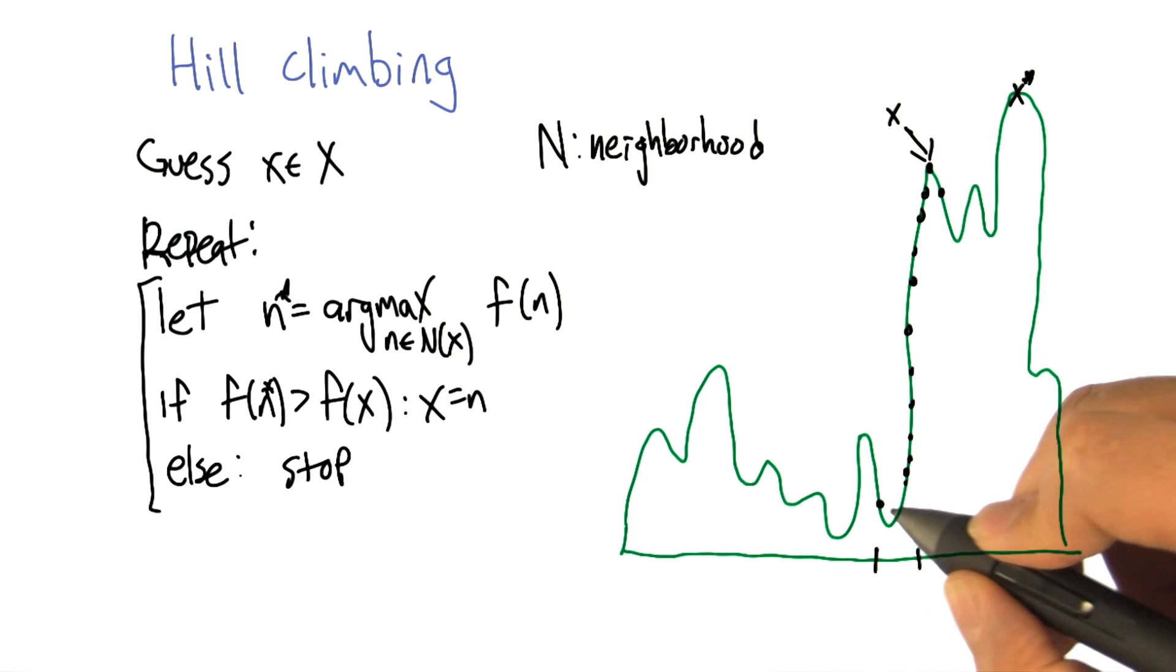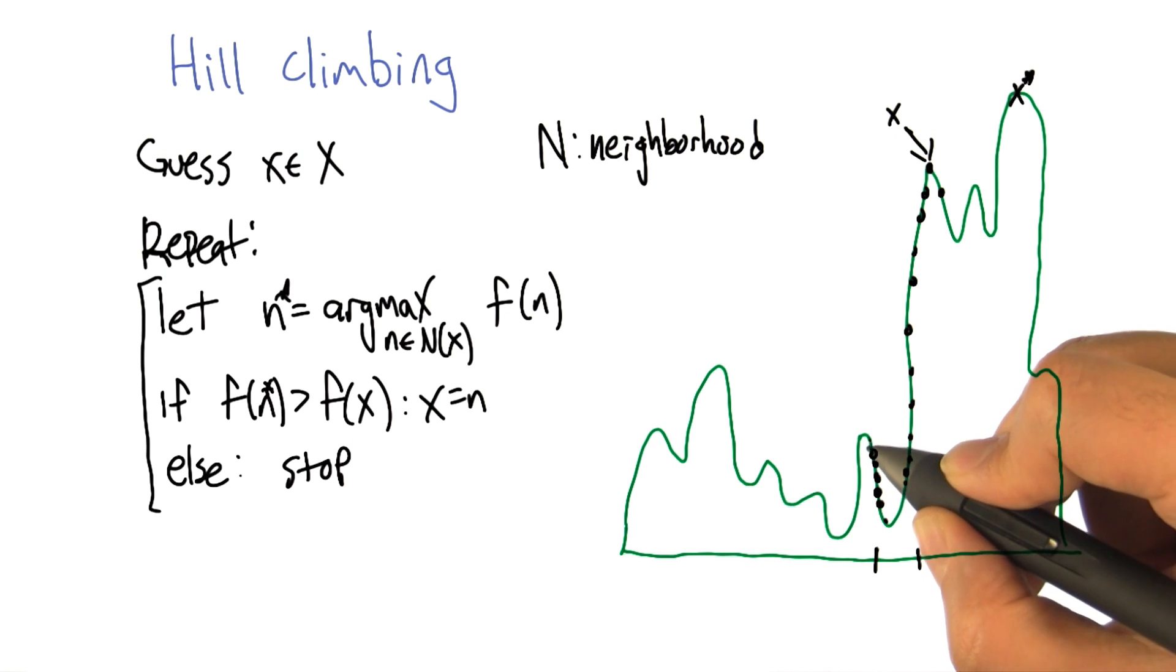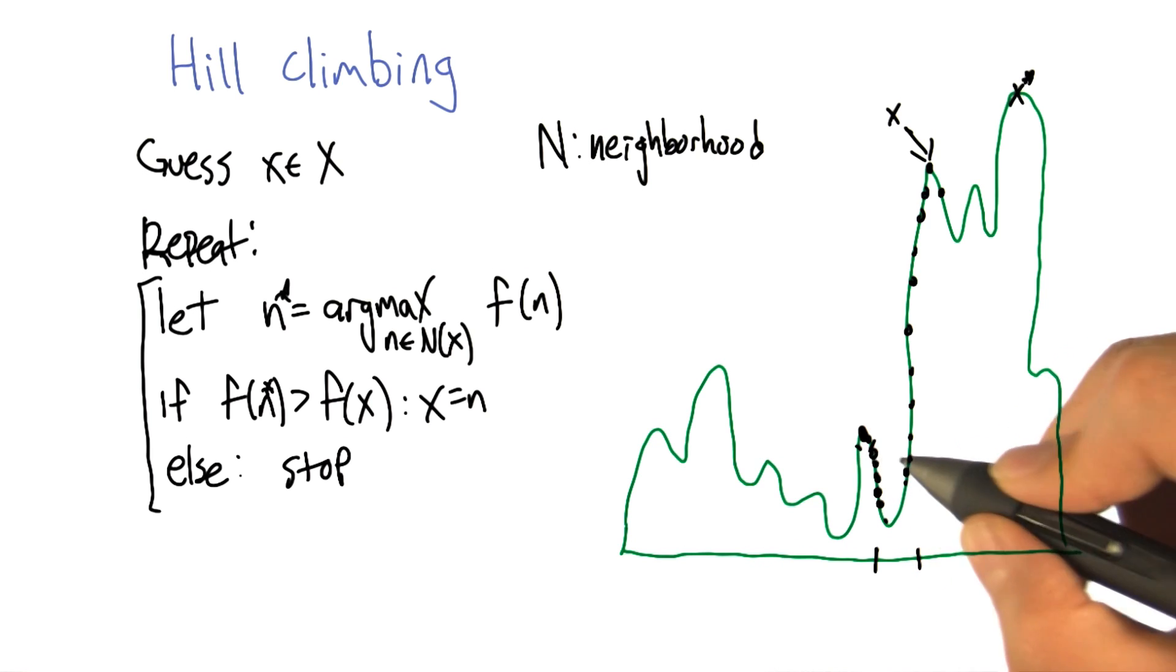If we start there, we take a step. We say what's the neighborhood? The neighborhood are the points just a little bit to the left and just a little bit to the right. One of them is an improvement, so it takes the improvement. And again, it keeps finding more and more improvement. And then it gets to the top of this little bump and it says, okay, both the points in my neighborhood are worse than where I am now. Hooray, I'm done.